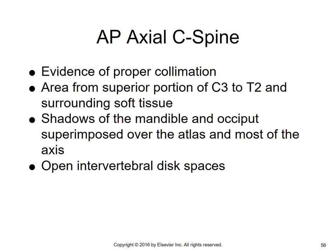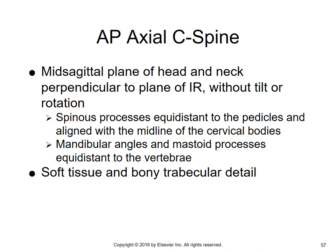For the AP axial image evaluation: proper collimation from the superior portion of C3 to T2 with surrounding soft tissue. The shadows of the mandible and occiput are superimposed over the atlas and most of the axis — this is why a separate view is needed for C1 and C2. Open intervertebral disc spaces are seen. The MSP of the neck and head is perpendicular to the IR without tilt or rotation. Spinous processes are equidistant to the pedicles, aligned with the midline. Mandibular angles and mastoid processes are equidistant to the vertebrae.